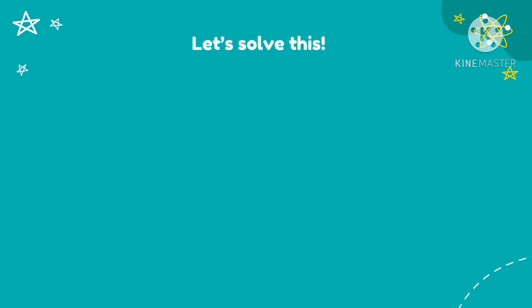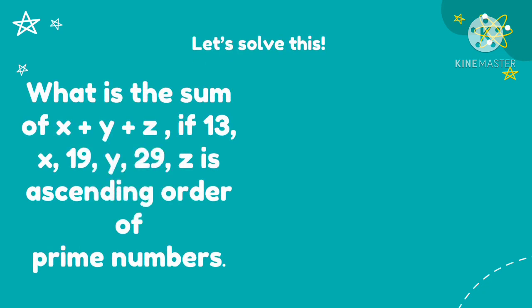Let's try to solve this problem. What is the sum of x plus y plus z if 13, x, 19, y, 29, z is ascending order of prime numbers? So how do we solve this? We're going to find the value of x, y, and z.